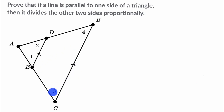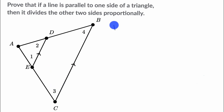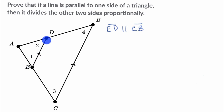Let's work through this together. We can start with this diagram. What we know is that segment ED is parallel to segment CB. Segment ED is what they're talking about — that is a line segment that is parallel to one side of the triangle.